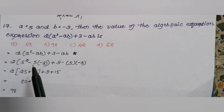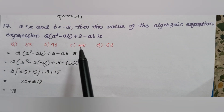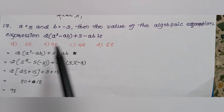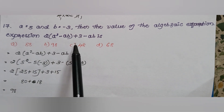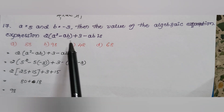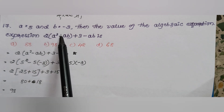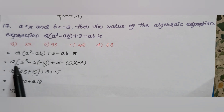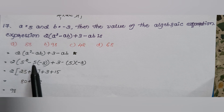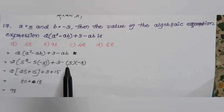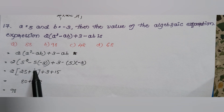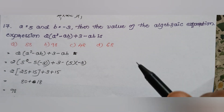If a = 5 and b = −3, find the value of the algebraic expression 2(a² − ab) + 3(−ab). Substituting a = 5 and b = −3 and simplifying, the answer is Option B.